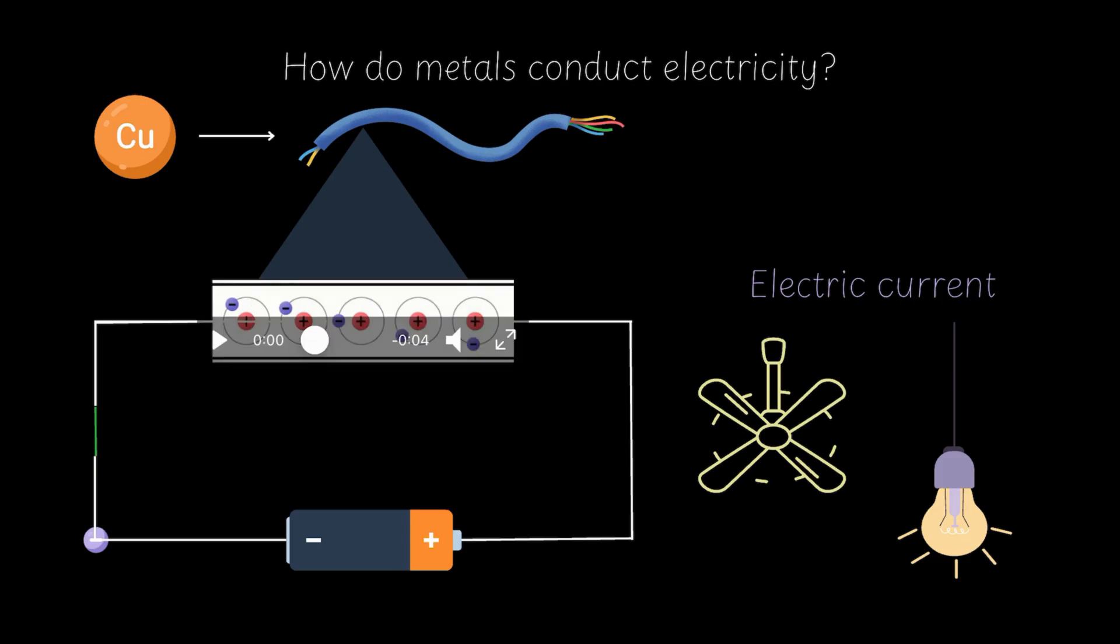So metals can conduct electricity because electrons can move freely through them. But what about liquids? They don't have any free electrons like metals do. So how do they conduct electricity?